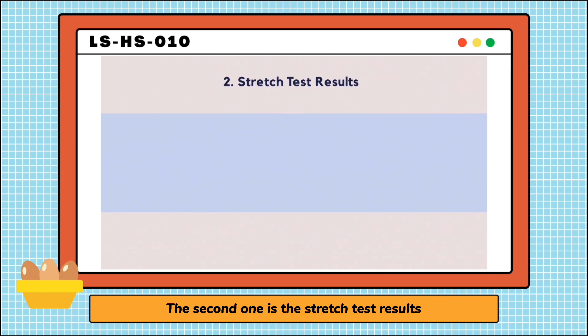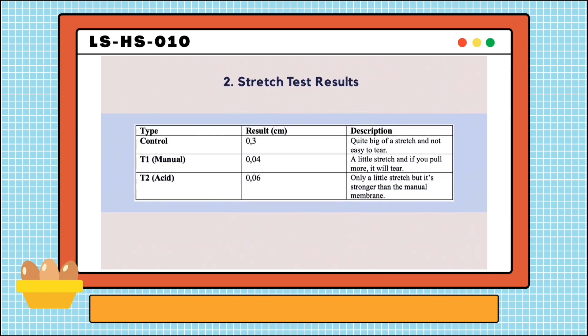The second one is the stretch test result. You can see the stretch value here, where the bigger it is, the better the stretch quality. The control has managed to be the best with a value of 0.3 cm. The two membranes have smaller value than the control, but T2 is slightly stronger than T1.